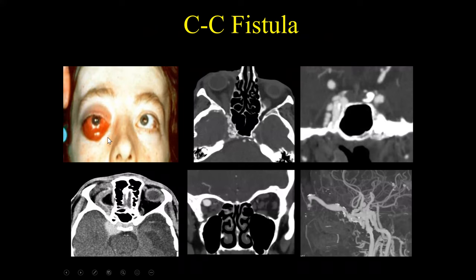Another cause of pulsatile exophthalmos is carotid-cavernous (CC) fistulas — there are two types. An indirect CC fistula involves branches of the external carotid artery extending directly into the cavernous sinus, giving multiple dilated vessels. A direct CC fistula involves direct communication between the artery and vein with arterialization of the superior ophthalmic vein. CTA demonstrates arterialization of the vein. A sagittal image demonstrates enlargement and arterialization of the superior ophthalmic vein. The right was an indirect fistula and the left a direct CC fistula.